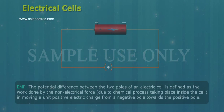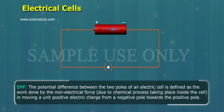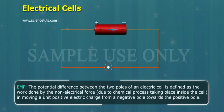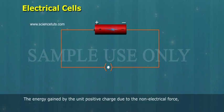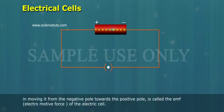Electrical cells EMF. The potential difference between the two poles of an electric cell is defined as the work done by the non-electrical force, due to chemical process taking place inside the cell, in moving a unit positive electric charge from the negative pole towards the positive pole. The energy gained by the unit positive charge due to the non-electrical force in moving it from the negative pole towards the positive pole is called the EMF, electromotive force.